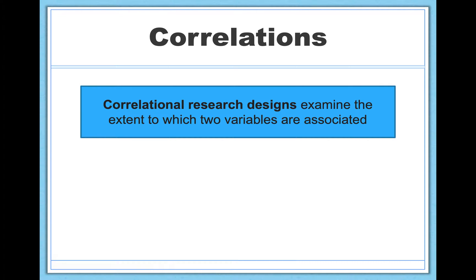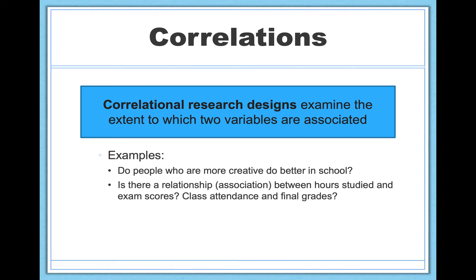Now, let's go through a few examples because correlational research designs are powerful because they allow you to address all sorts of questions you might have about the world. For example, do people who are more creative do better in school? So is there a relationship between creativity and academic performance? Is there a relationship or an association or a correlation? These are all just similar ways of saying the same thing.